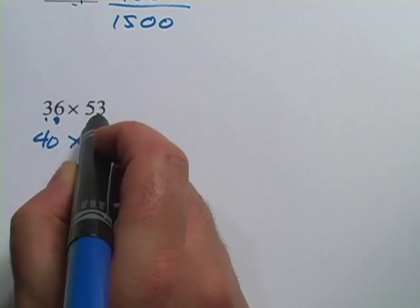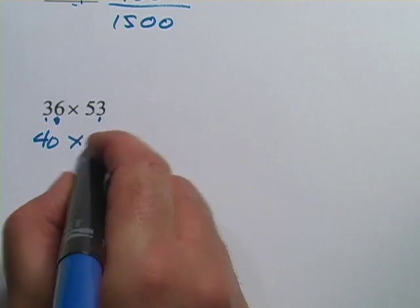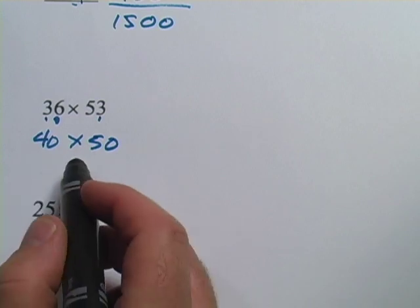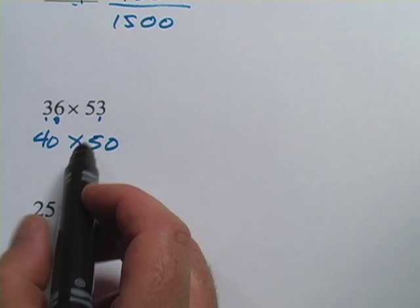And the 53, the next digit over is a 3. That's less than 5, so I round down to 50. And now I get 40 times 50, which is a lot easier to figure out. But in case that still might make you stuck here,